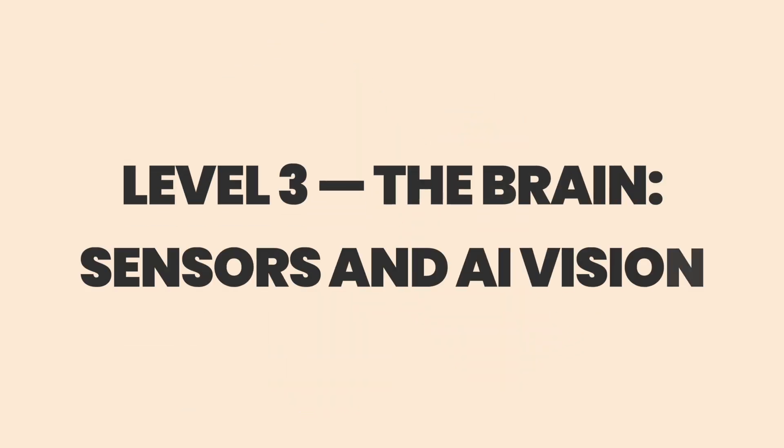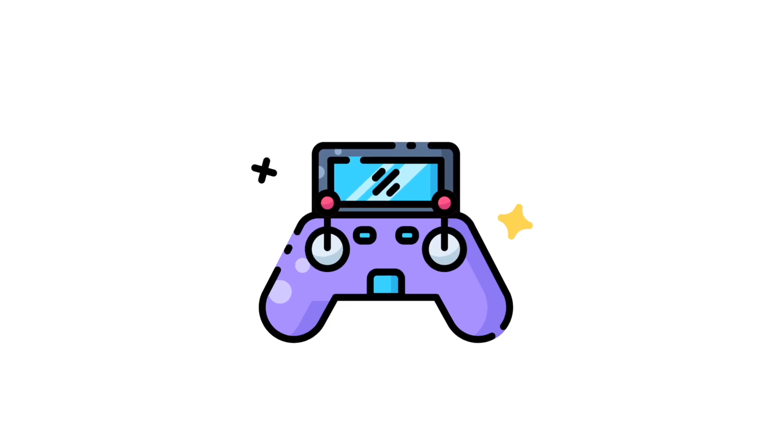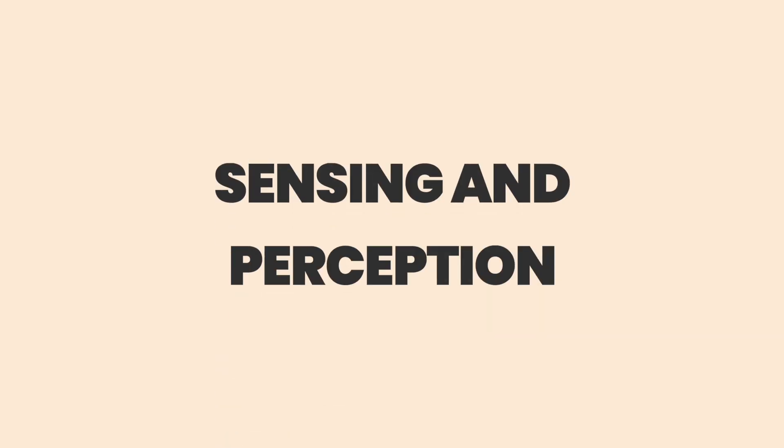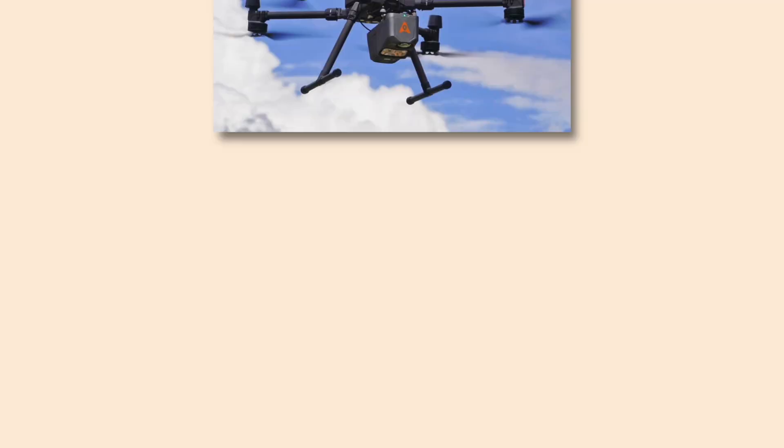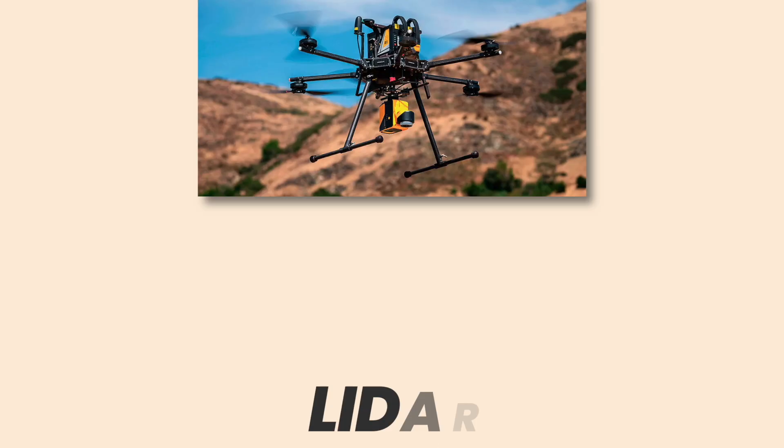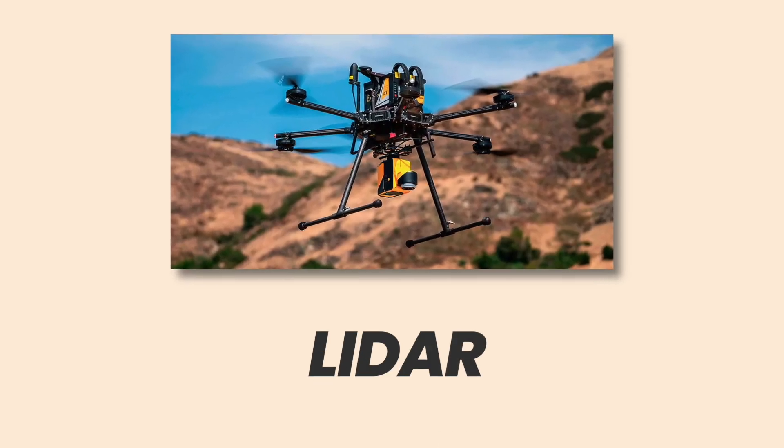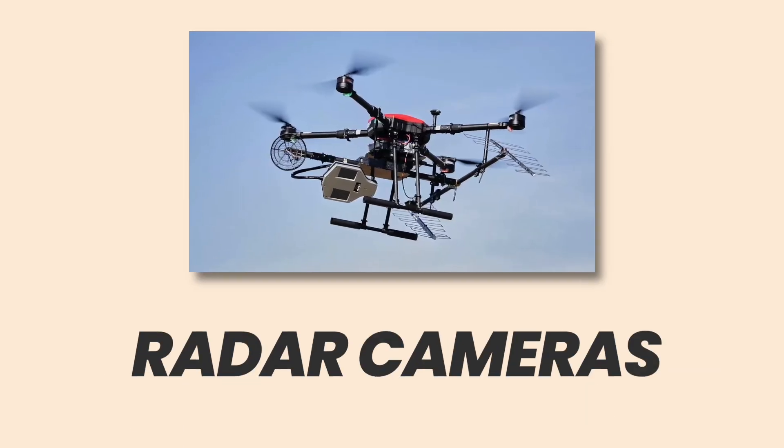Level 3. The brain. Sensors and AI vision. What separates a remote-controlled toy from an autonomous worker is sensing and perception. Modern commercial drones carry sensor suites that read the world in multiple spectra, RGB cameras, multispectral imagers for plant health, LIDAR for precise 3D mapping, thermal cameras for search and rescue, and radar for all-weather navigation.